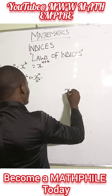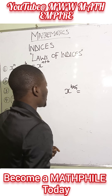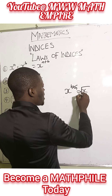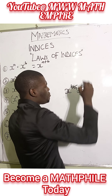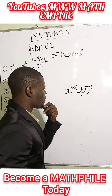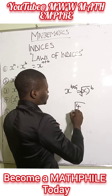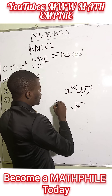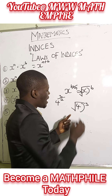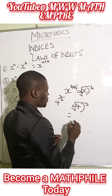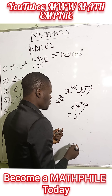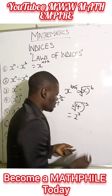We also have x raised to the power of b over a. This implies the a-th root of x, raised to the power of b. Let me use a known variable. We have 4 raised to the power of 3 over 2. It's now going to be the square root of 4, then raised to the power of 3. Remember, we already have 2 here as the root but we don't normally write it. Since the square root of 4 gives us 2, we still have our exponent, which means 2 times 2 times 2, giving us 8.